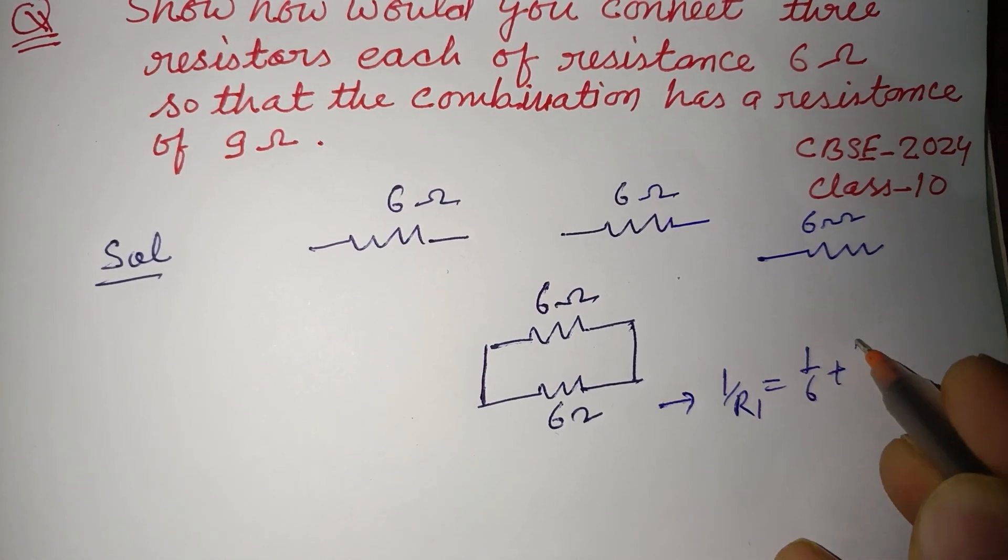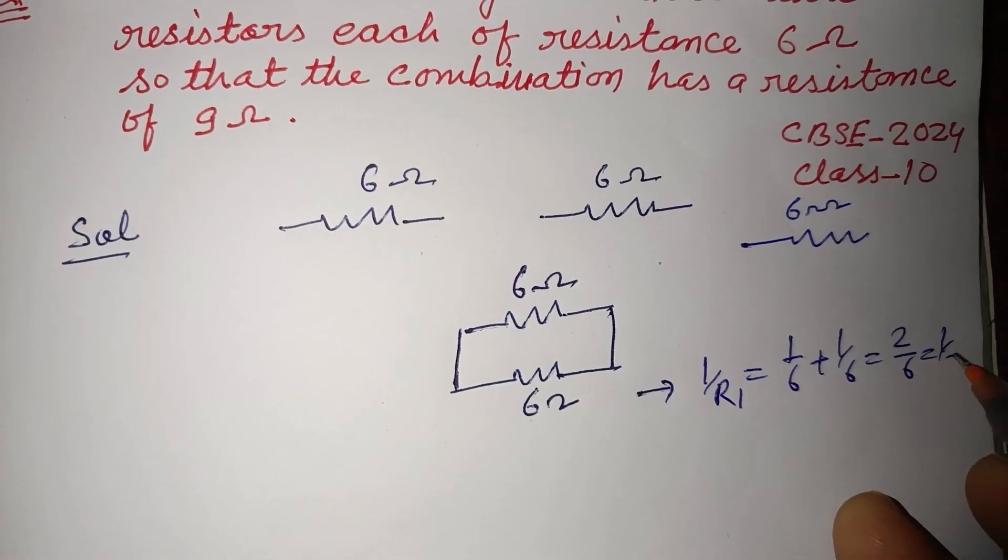1 upon 6 plus 1 upon 6. This is 2 upon 6, which is 1 by 3. So r1 equals 3 ohms.